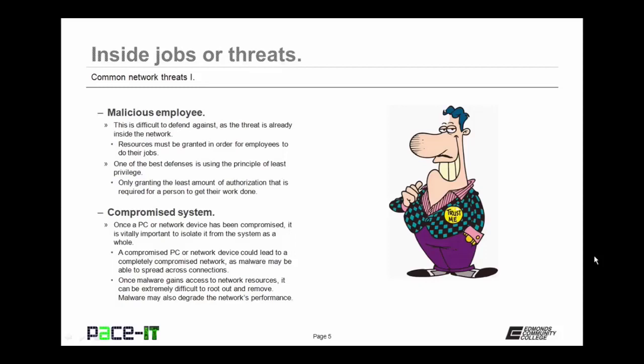Compromised systems are another threat. Once a PC or network device has been compromised, it is vitally important to isolate it from the system as a whole. A compromised PC could lead to a completely compromised network, as malware may be able to spread across its connections. Once malware has gained access to network resources, it can be extremely difficult to root out and remove. Malware may also degrade the network's performance, causing other issues.